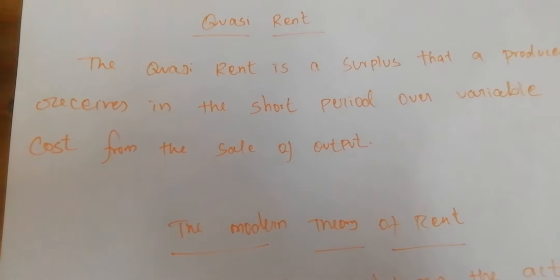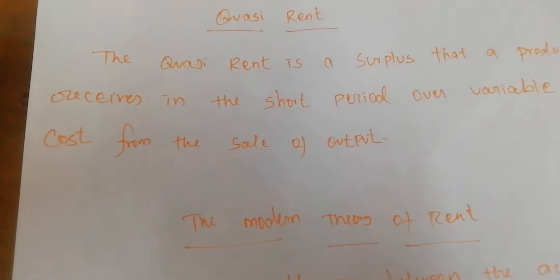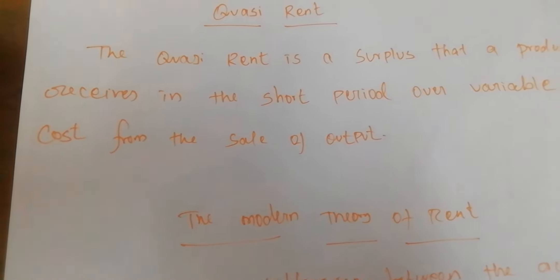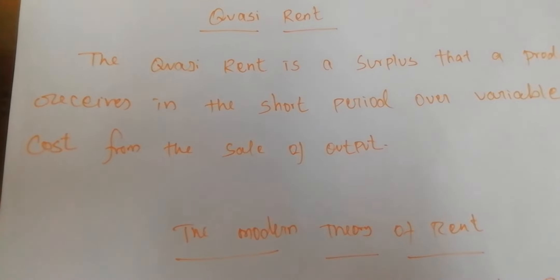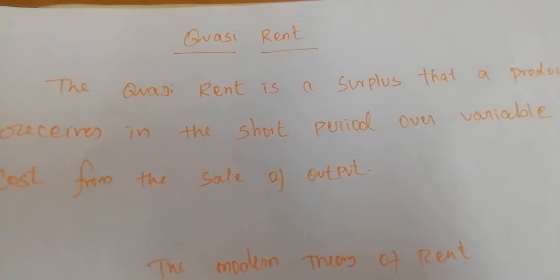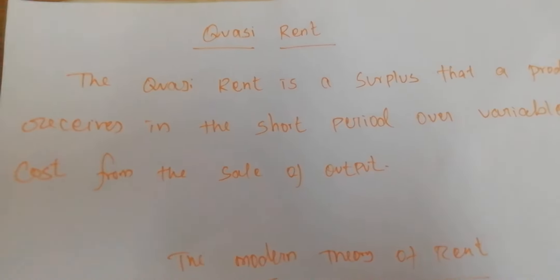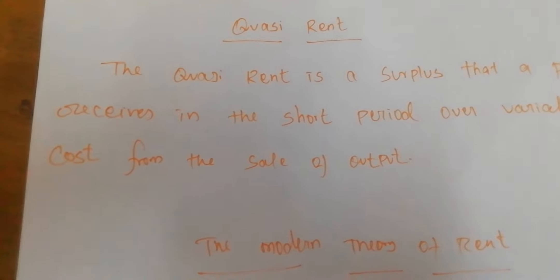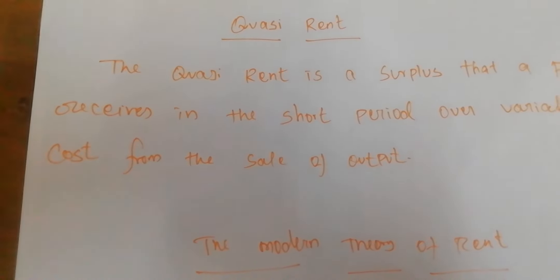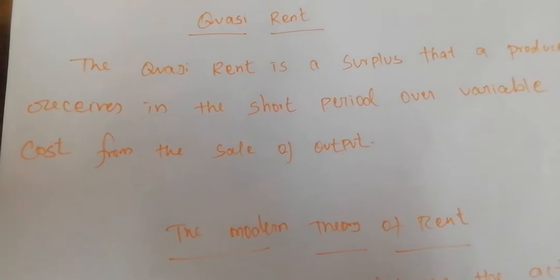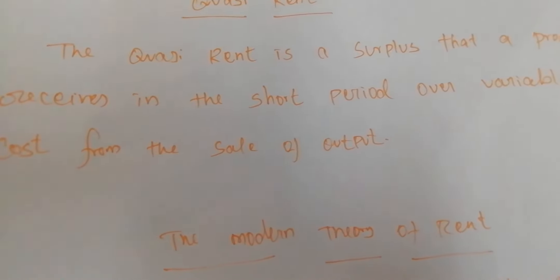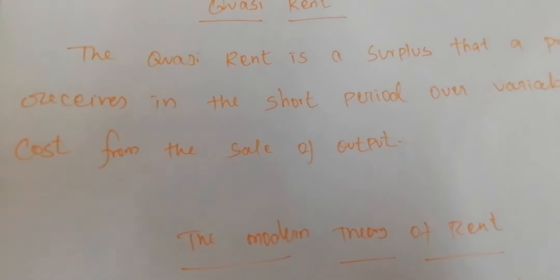Except for land, other factors of production such as machinery, plant, and extra tools are also considered factors of production. They earn surplus income when demand rises. If demand increases, we change the variable factor accordingly. Suddenly we can arrange some extra machinery, and from that extra machinery, if we are getting some extra profit or rent, that is considered quasi rent.